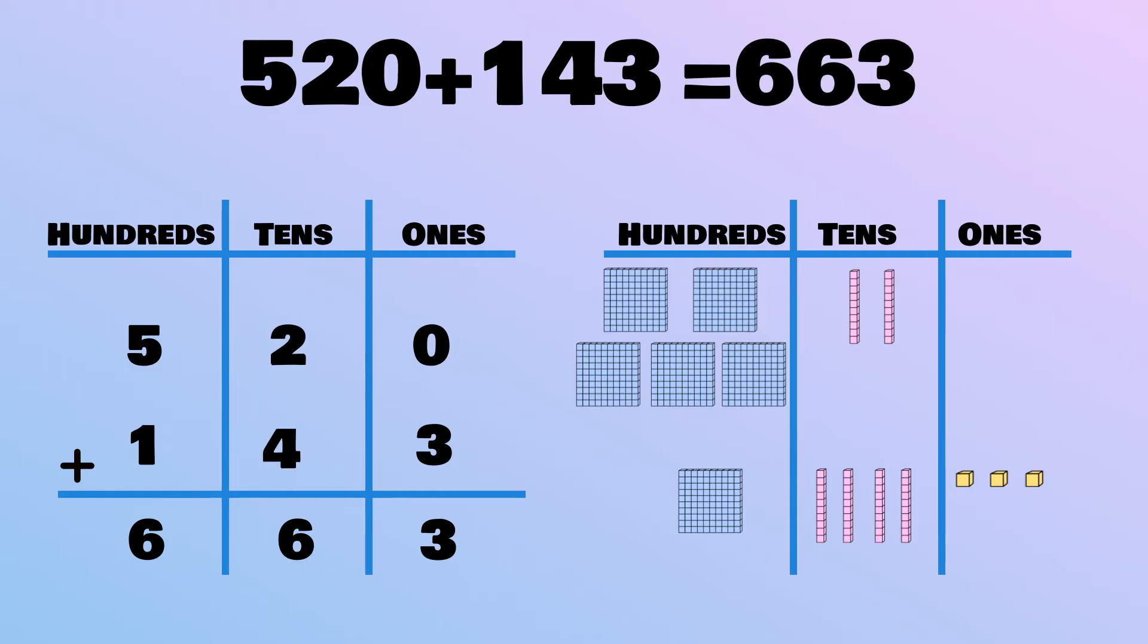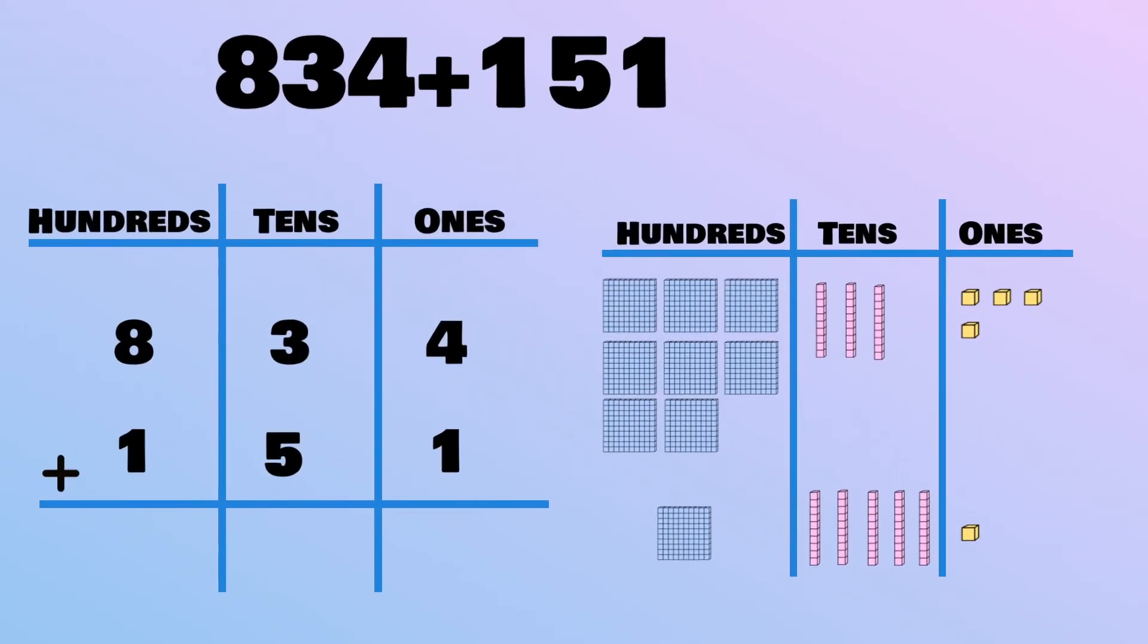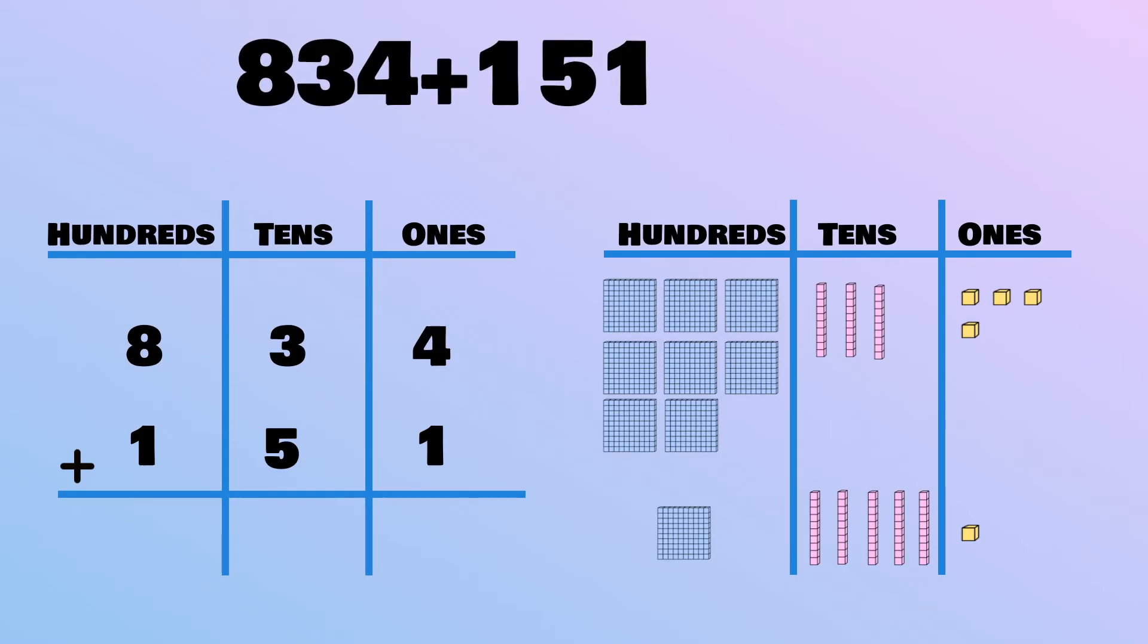Now, let's tackle another one. The equation is 834 plus 151. Which place value spot do we start with? You've got it! The ones place. 1, 2, 3, 4, 5.